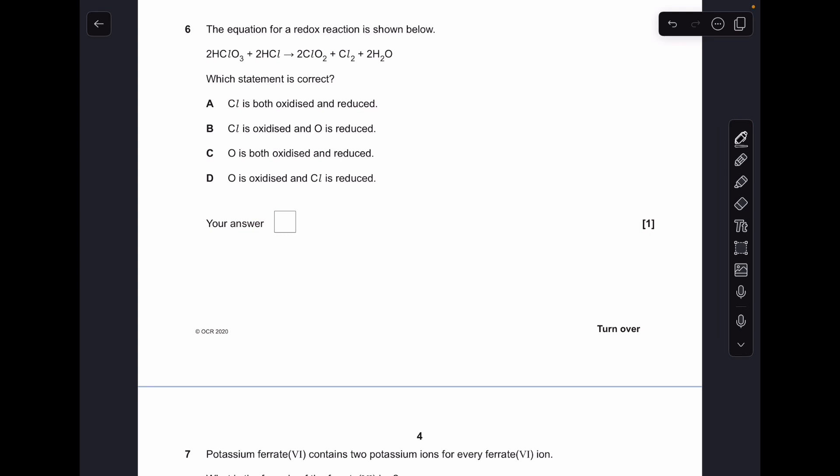Number six: we're going to need to work out the oxidation numbers for the chlorine and oxygens in this equation. Now we've got the numbers in, we can see clearly that oxygen's oxidation number hasn't changed - it's stuck at -2. So statements B, C, and D are obviously wrong because they imply that it does change. That only leaves A, which must be the right answer. And if you look at the oxidation numbers for chlorine, it does go up and down, so it has been oxidized and reduced.